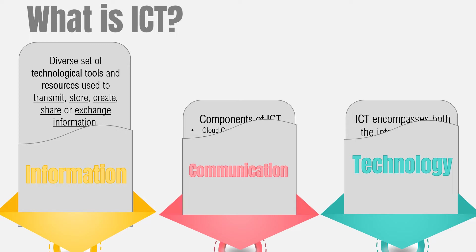It could be an ancient method or a modern method. Ancient methods of transmitting information encompass oral or face-to-face communication, beating drums, smoke signals, and making representations. Modern methods include writing, printing machines, radio, television, internet, telephone, GSM, or global system for mobile communication.